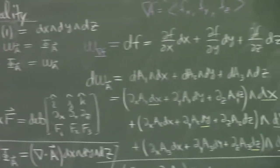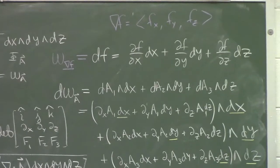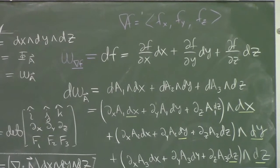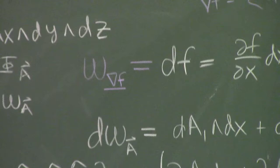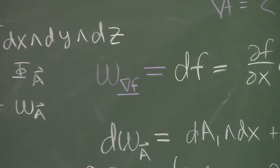And then I mentioned that the exterior derivative of a function gives us a one form. And in fact, the DF is actually the work form corresponding to the gradient of the vector field.